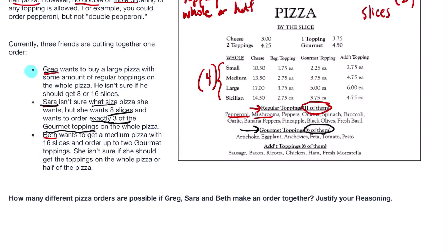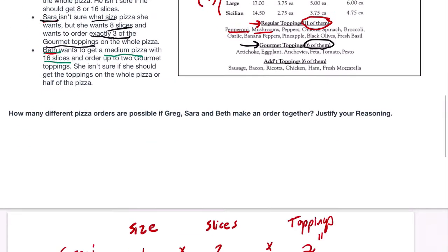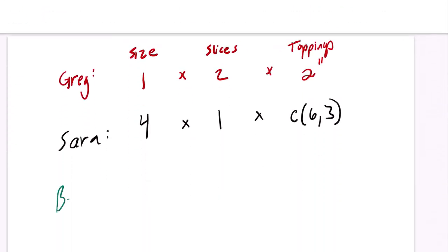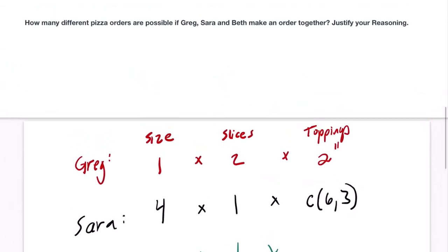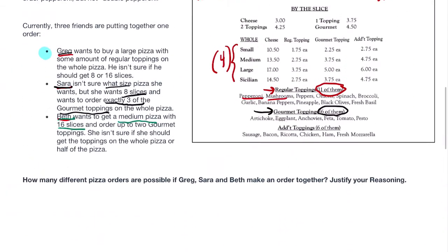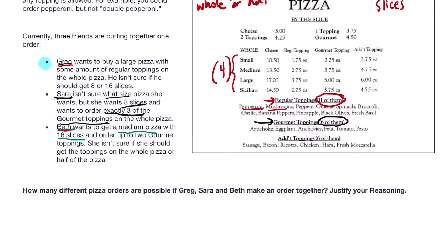And finally, we go to Beth. Beth wants to get a medium pizza with 16 slices. So for Beth, so far, things are going well. She knows she wants the size, medium, and she knows the slices she wants. But for toppings, let's see what she wants. She isn't sure if she should get the toppings on the whole pizza or half the pizza. And she wants up to two gourmet toppings. So gourmet toppings, we're back in this category. There are six of them. She wants up to two.